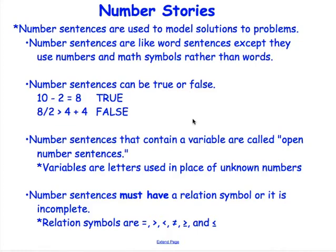Number sentences can be true or false. 10 minus 2 equals 8 is a number sentence, and it is true because 10 minus 2 does equal 8. Now, 8 divided by 2 is greater than 4 plus 4. That's also a number sentence. However, this number sentence is false. Because if we think about what value 8 divided by 2 holds, 8 divided by 2 is 4. And if we think about the value of 4 plus 4, which is 8, 4 is greater than 8. That's not true. That's how it's a false sentence.